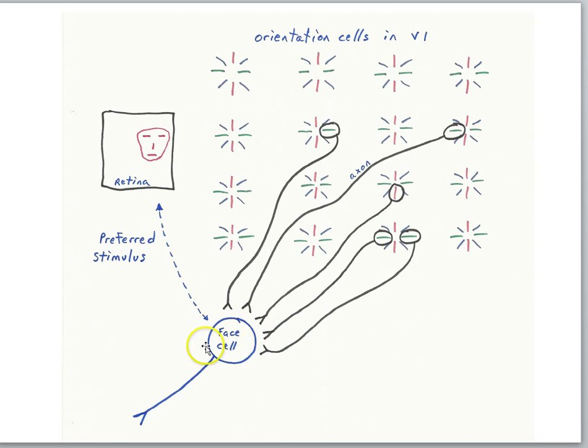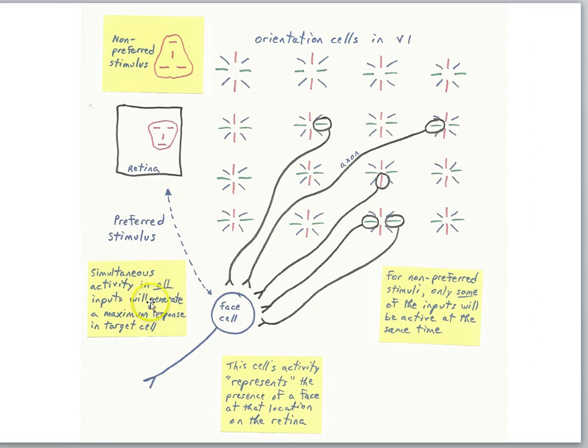You can set up a situation where target cells are going to respond to a certain preferred stimulus face and not another face, whereas other cells will respond to different faces and not that face that is currently on the retina.